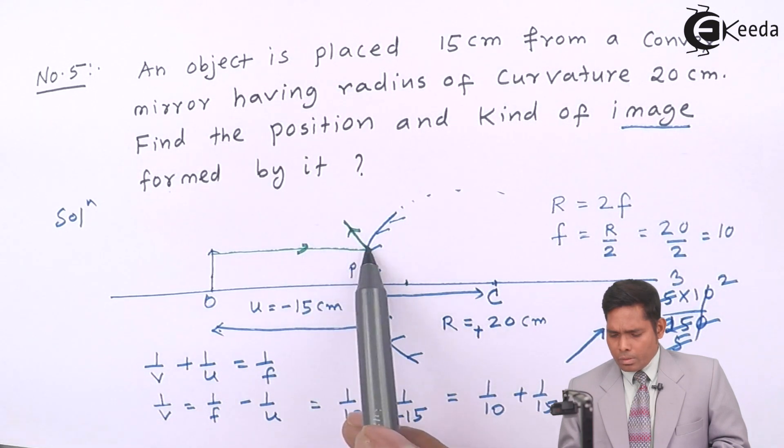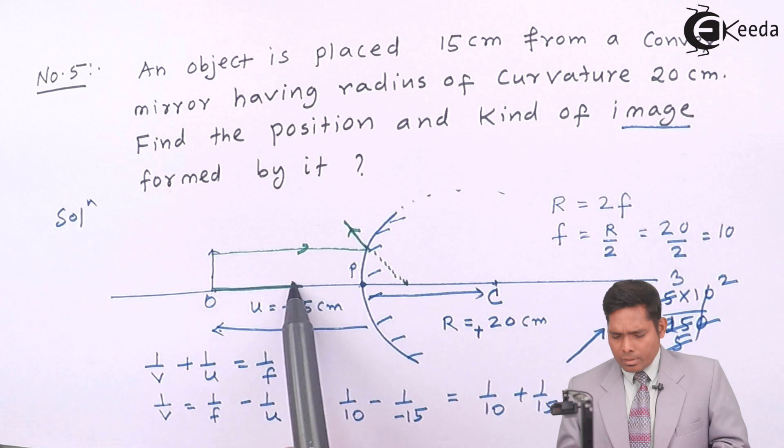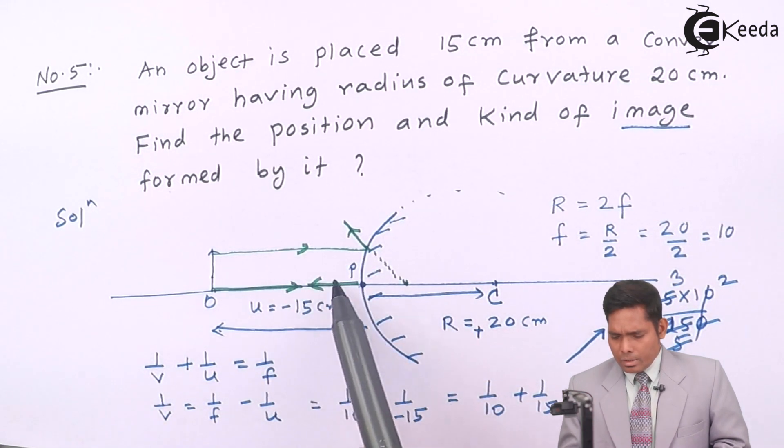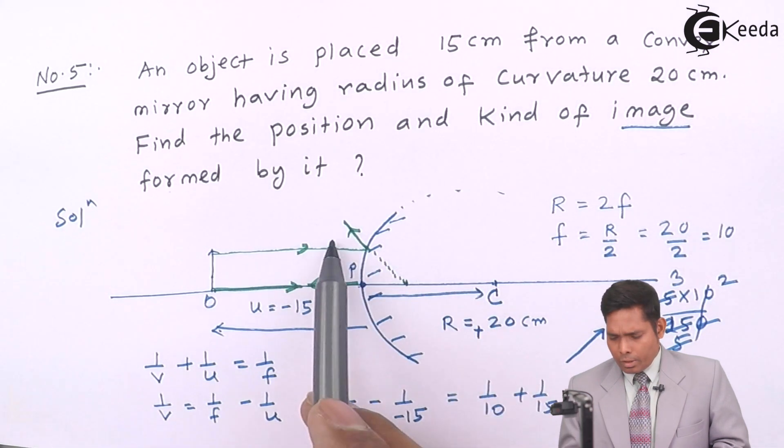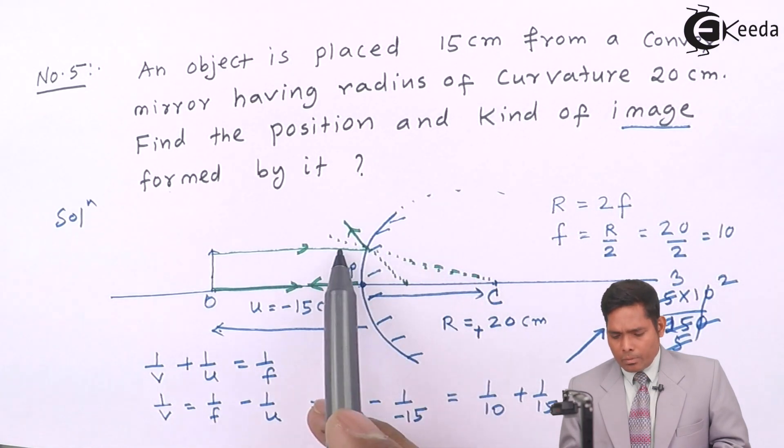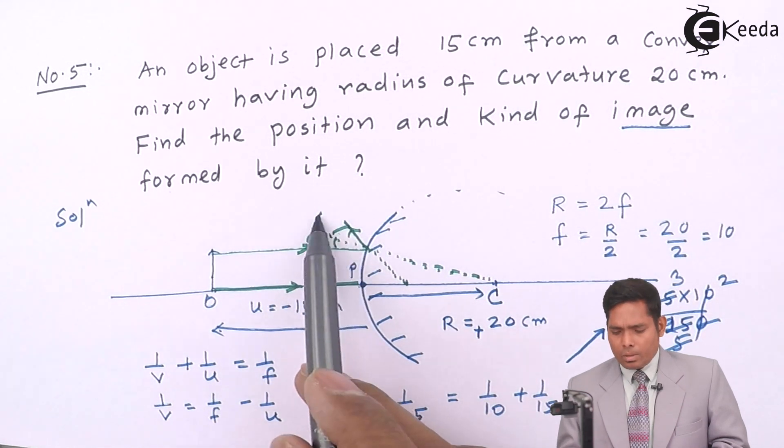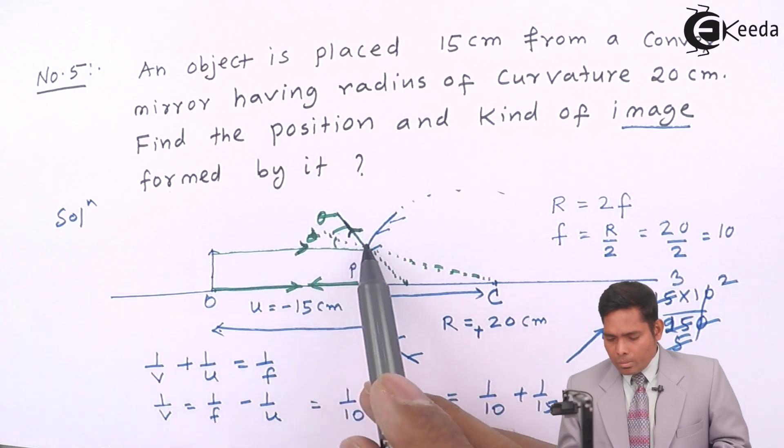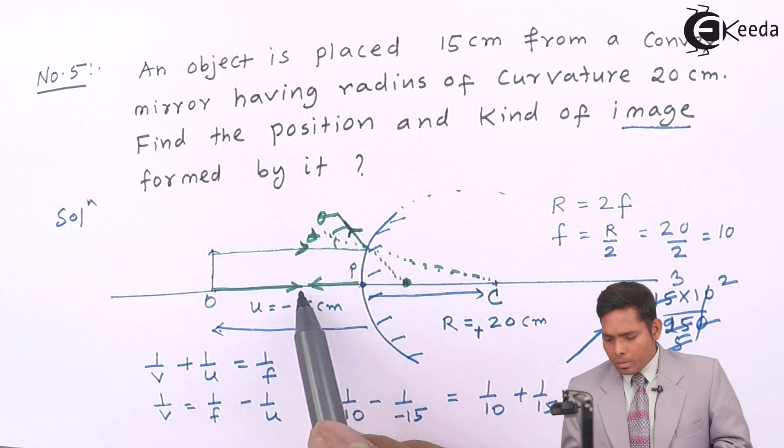If this distance is 20, 6 will be somewhere here. The ray will go like that. If you extend this in the backward direction, it will meet here. And this ray coming like this will be reflected back like that, following the same path because this is the normal.